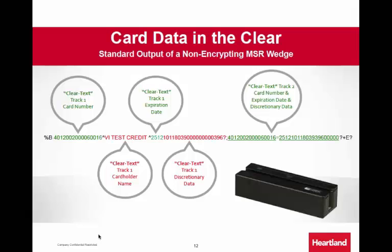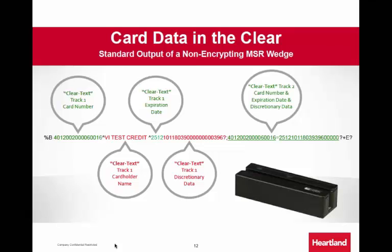Heartland Secure provides a three-tiered approach: end-to-end encryption, tokenization, and EMV chip-based cards. Traditionally, card data when using a magnetic stripe card reader has been in the clear — not encrypted. The data encoded on the back of a magnetic stripe card, including the card number, expiration date, cardholder name, and discretionary data, is all in clear text. If you read a magnetic stripe with a standard reader, you'll see the complete data that's on the stripe.